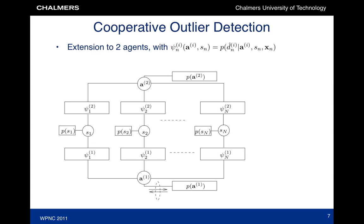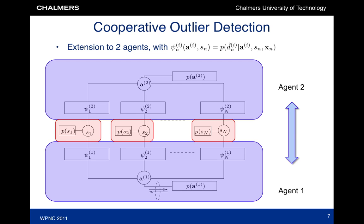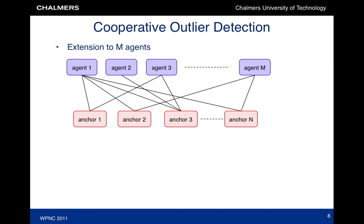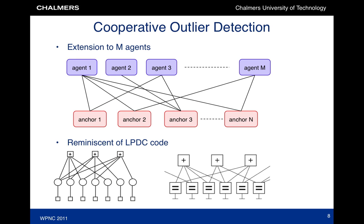This scheme can be easily extended to multiple agents — in this case two agents. These agents exchange information through packets over the wireless network regarding the state of the anchors. By rearranging the parts of the factor graph and adding more and more agents, we get a factor graph structure somewhat reminiscent of LDPC codes, which have factor graphs that look similar. We actually use this similarity to perform an EXIT chart analysis in the paper.